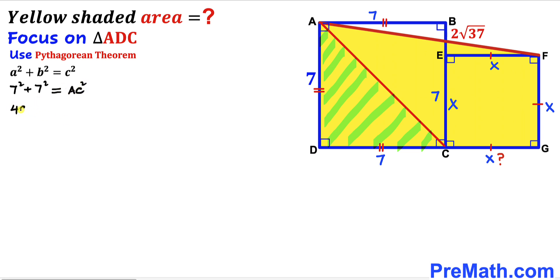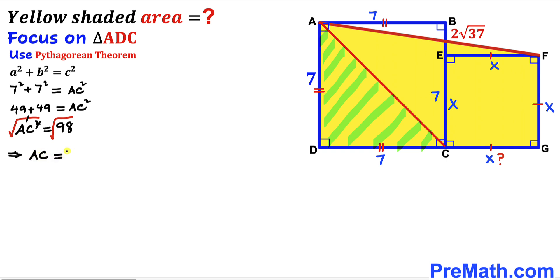Simplifying: 49 + 49 = AC², so AC² = 98. Taking the square root of both sides, the diagonal AC turns out to be 7 times square root of 2 units.